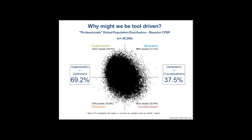Why are we tool-driven? Our research on 30,000 people globally — people who work in organizations, professionals — shows the vast majority are implementers and optimizers. You can speculate why, but most of us lean in that direction. The smaller part — generators and conceptualizers — is over here. We need a balanced approach. When we're just looking for the quickest tool, we're falling into the implementation side.